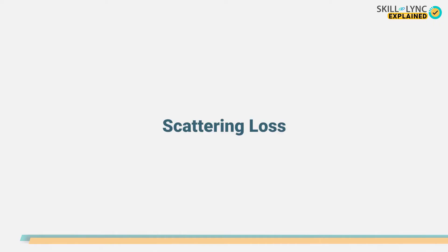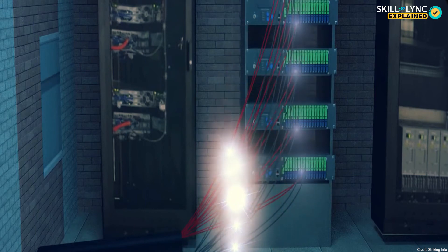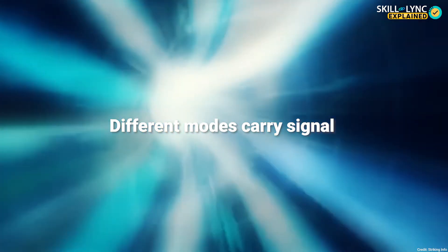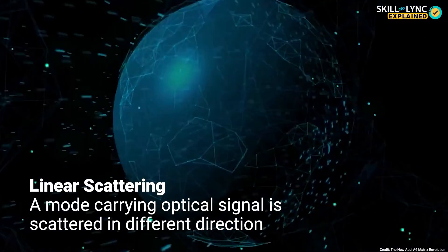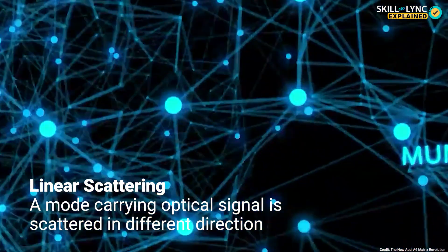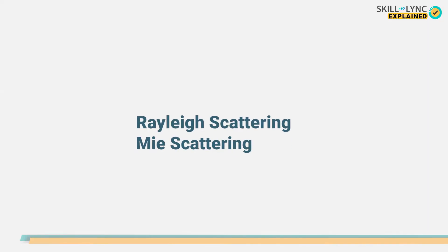After absorption loss, we have scattering loss. Scattering loss scatters the signal inside the optic cable. Scattering loss is further divided into linear scattering and non-linear scattering. Inside an optical fiber there are different modes that carry signals. A condition in which a mode carrying an optical signal is scattered onto a different mode is termed as linear scattering.